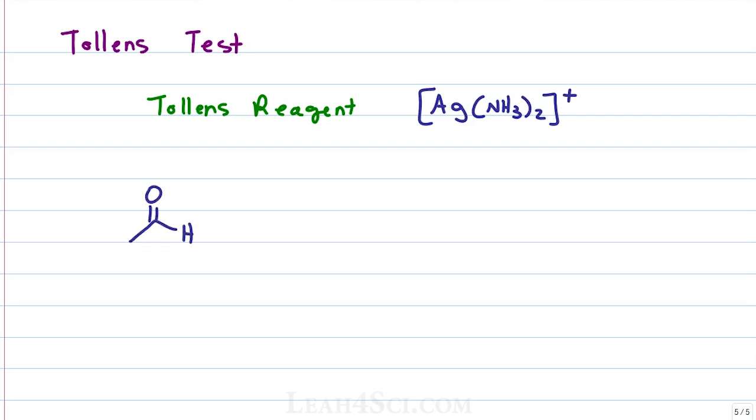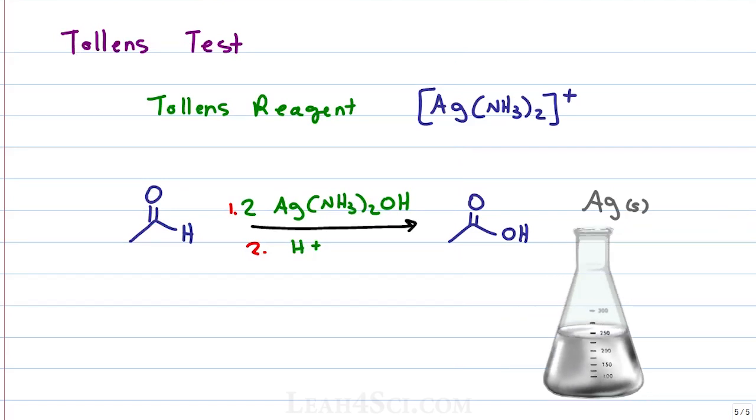If I react an aldehyde with a Tollens reagent typically written as Ag(NH3)2OH followed by an acid workup, the product is going to be a carboxylic acid.